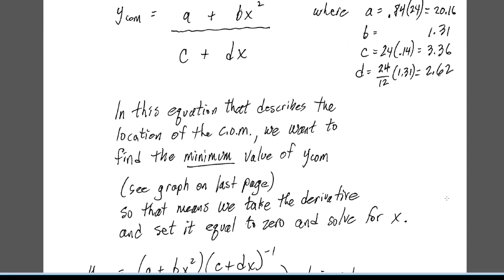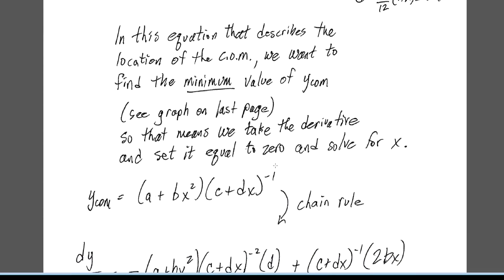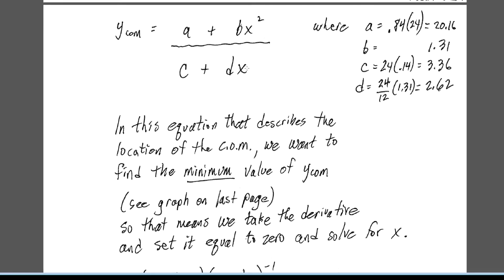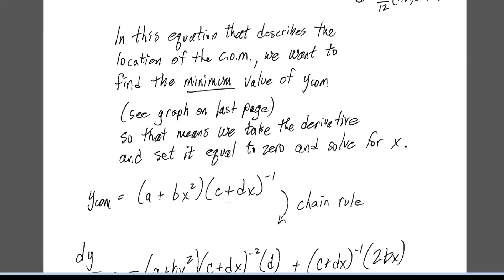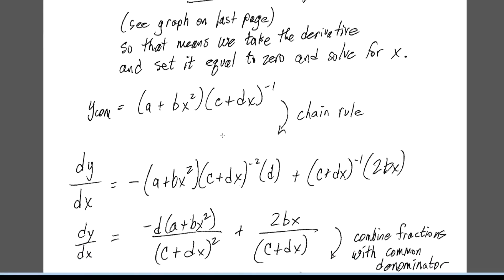We take the derivative by rewriting the expression as a product with the denominator raised to the negative one power. Applying the product rule — first times the derivative of the second, plus the second times the derivative of the first — gives us: the first term uses the chain rule yielding a negative-one power becoming negative two, multiplied by the derivative of the inside. The derivative of the first term is just 2bx.